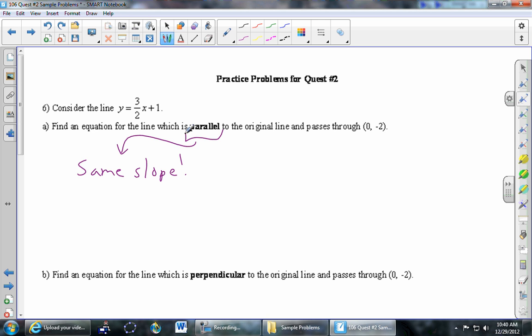So what's the slope of the original line? Well, one version of our equation of a line is y equals mx plus b. Slope is m, it's the number touching the x. And fortunately for us, that number is easy to pick off from the equation they gave us. So the slope is 3 halves.